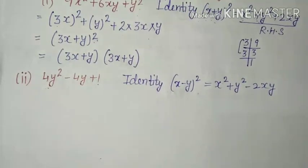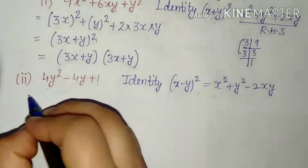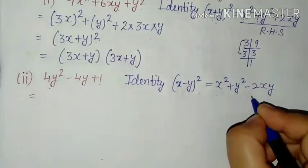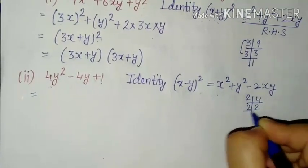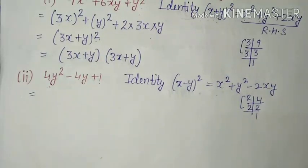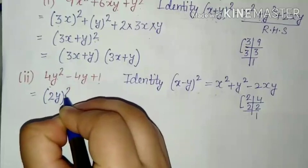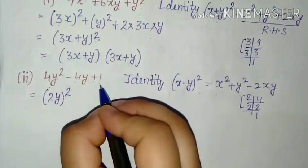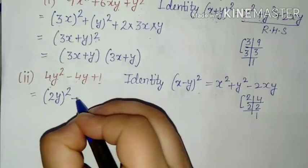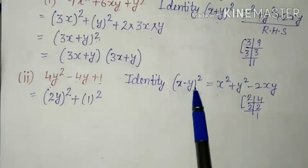So isme bhi right hand side given hai. Hame left hand side ki form mein likhna hai. So first humne check karna hai ki do terms square. To ek to four y² hai. Four — simply humhe pata hai 2 ka hai. Otherwise aap iske factors banakar dekh sakte ho: 2×2=4, 2×1=2 — 2 ka pair ban raha hai. Means four kiska square hai? 2 ka. 2 ke saath y² hai — to 2y ka square. Ab 1 ka square karenge — 1 aa jaega. 2y ka square karenge — 4y² aa jaega. So yeh left hand side ki form mein: x minus y ka square. X ki jagah kya hai? 2y. Aur y ki jagah kya hai? 1.